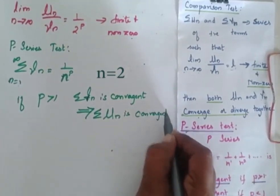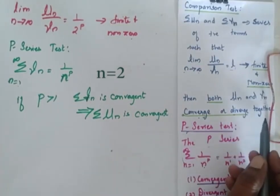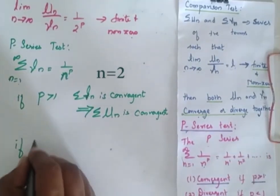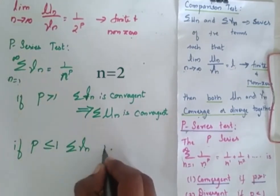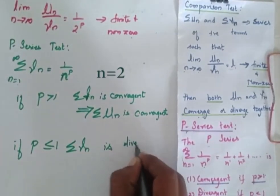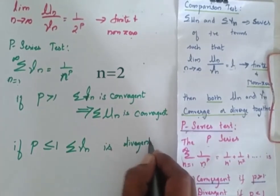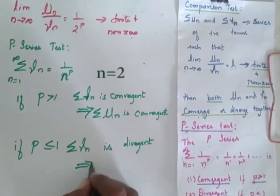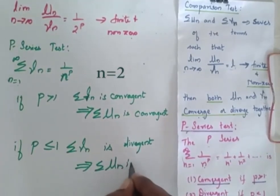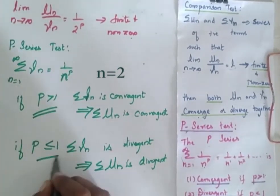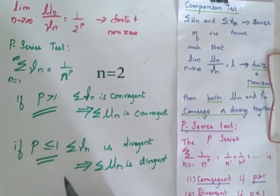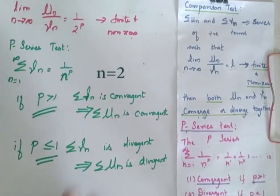If P is lesser than or equal to 1, summation VN is divergent, which implies that summation UN is also divergent. So we come across two possibilities: if P is greater than 1 the series is convergent, and if P is lesser than or equal to 1 the series is divergent.